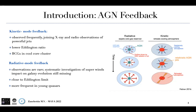The kinetic mode is observed frequently during X-ray and radio observations of strong and powerful radio jets. It is observed in objects at lower radiation, mainly in the brightest cluster galaxies in cool-core clusters, as you can see here. The radiative mode observations are still rare, and the impact of the AGN on galaxy evolution is still unclear. This mode is more frequent in objects close to the Eddington limit and in young quasars.